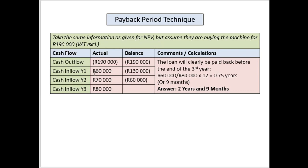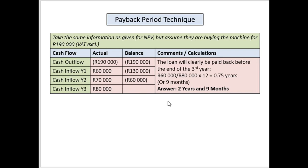We start at negative 190,000. After receiving 60,000, the balance is negative 130,000. After receiving 70,000, the balance is negative 60,000. We receive 80,000 in year three — we don't need the balance because we've already exceeded the outflow. The loan is paid back before the end of year three. The remaining balance of 60,000 divided by the year-three income of 80,000, multiplied by 12 months, gives 0.75 years.